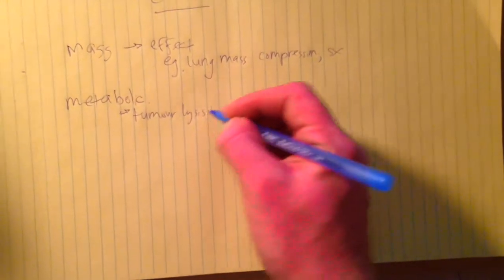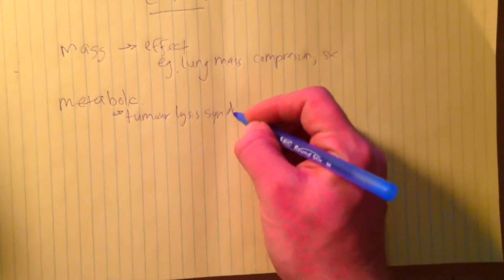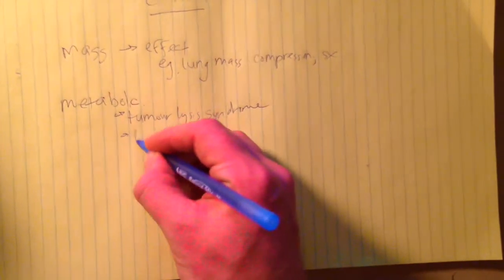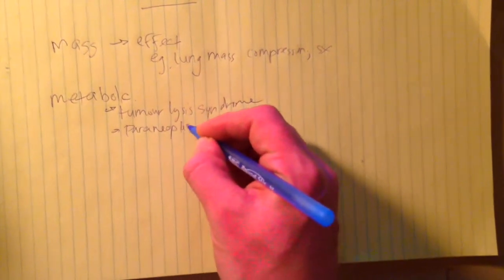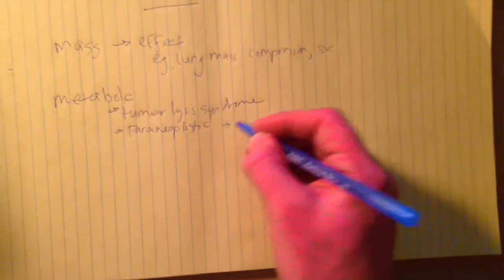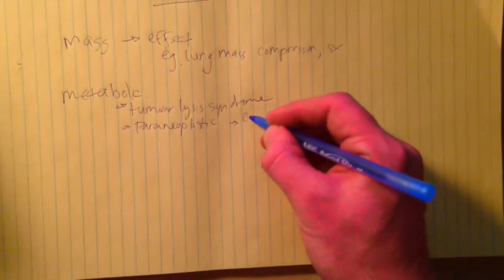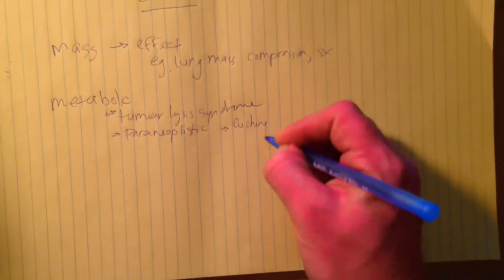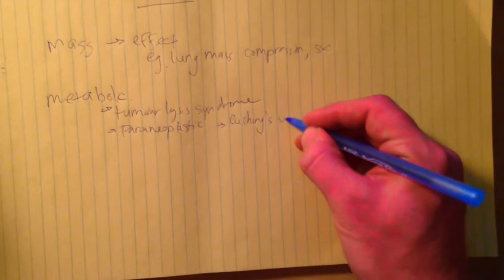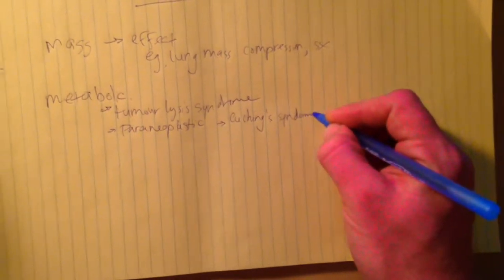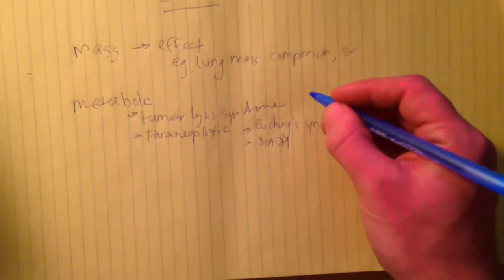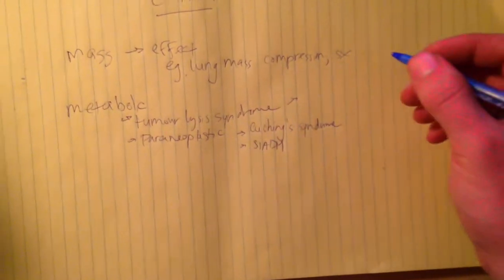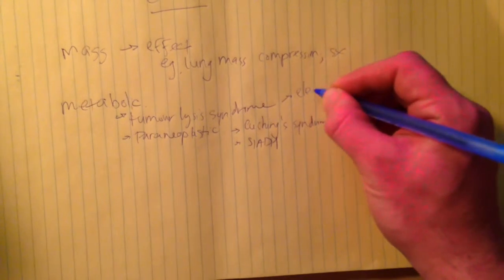You can think of it in leukemias and lymphomas. You can think of paraneoplastic syndromes. Lung cancer is a good example for that with Cushing's. It can cause a Cushing's syndrome. SIADH and of course with tumor lysis syndrome you're thinking about electrolyte abnormalities.